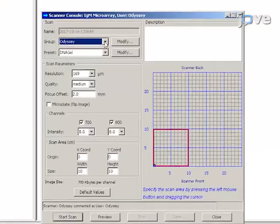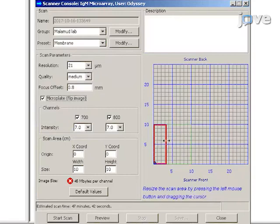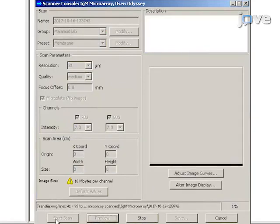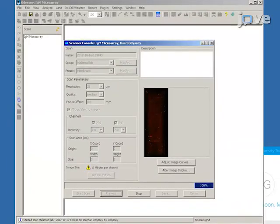Set scanner parameters with a resolution of 21 microns, an intensity of 7.0 for both the 700 and 800 nanometer channels, a scanning quality of medium and an offset of 0.8. Acquire and save the scanned raw image as a 16-bit grayscale TIFF file format.